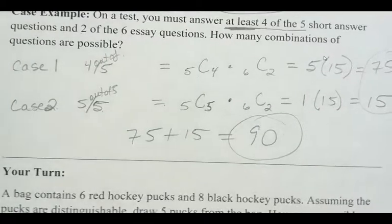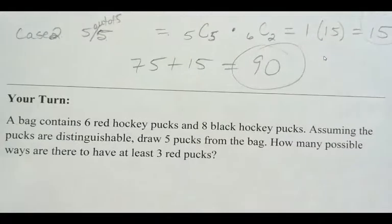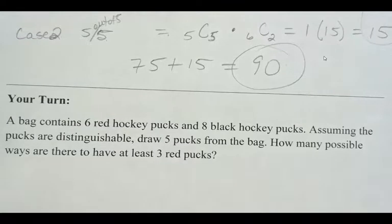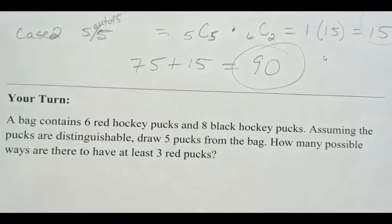Now, your turn. You've got a bag. And it has hockey pucks. 6 are red. 8 are black, assuming that they are distinguishable. Draw 5 pucks from the bag. How many possible ways are there to have at least 3 red pucks?